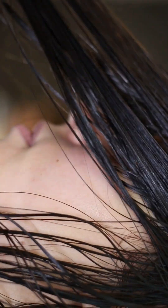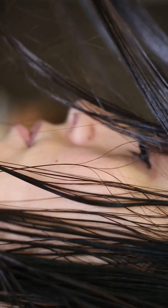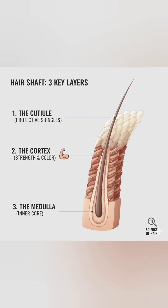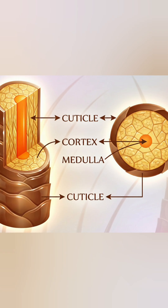That's why when you get a haircut, you don't feel a thing — no pain, only gains! Now let's zoom in on this hair shaft. It has three main distinct layers: the cuticle, the cortex, and the medulla.